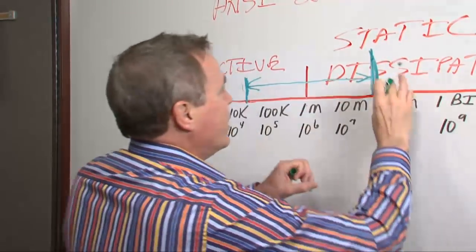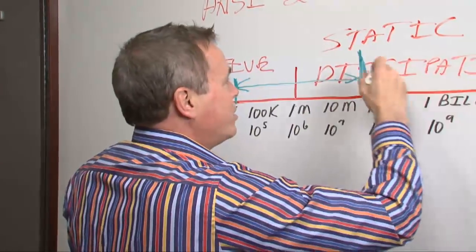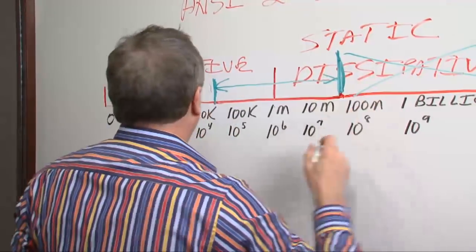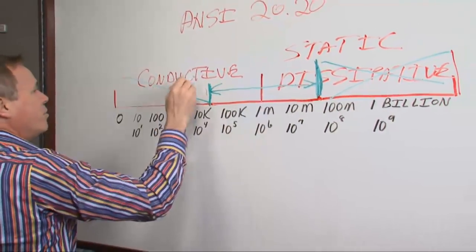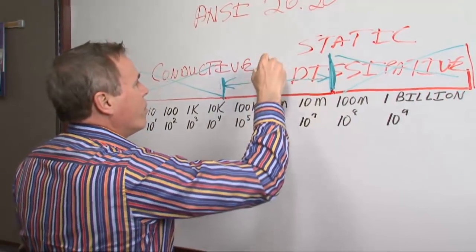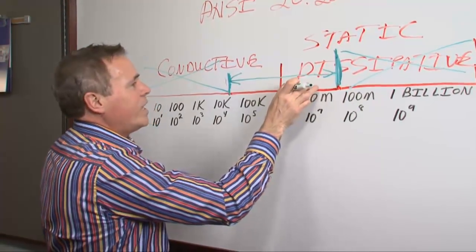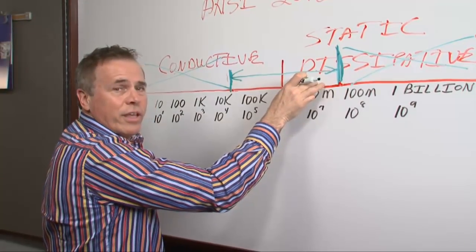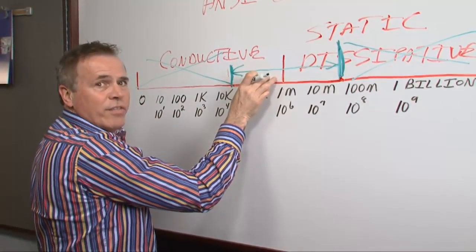We have the highest margin where the floor will meet this ANSI 2020. So we've essentially eliminated a big portion of the static dissipative range. And we've eliminated a big portion of the conductive range. But if you notice, we're in between the two.